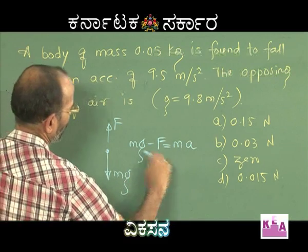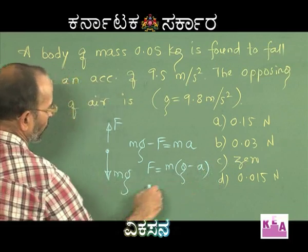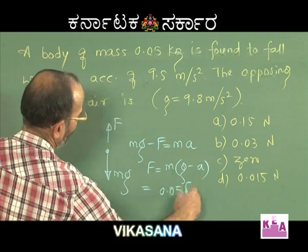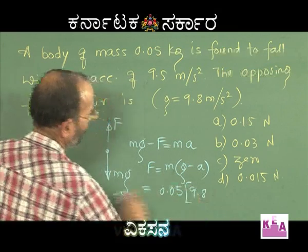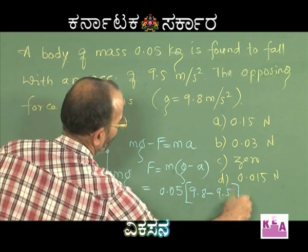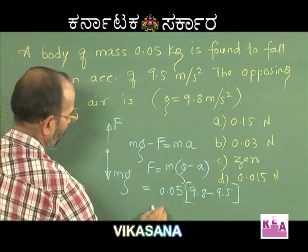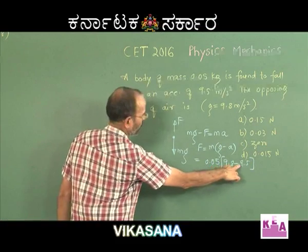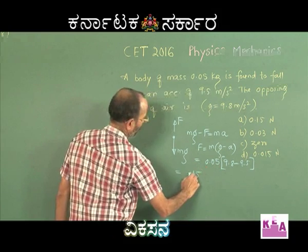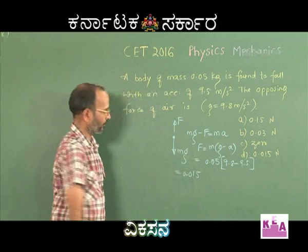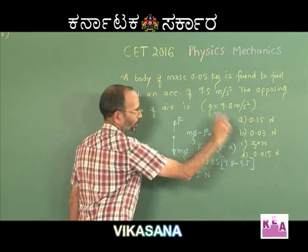So F equals m times (g − a), which is 0.05 × (9.8 − 9.5). That gives 9.8 − 9.5 = 0.3, and 0.05 × 0.3 = 0.015 Newton. This is the force of air resistance, and D is the correct option.